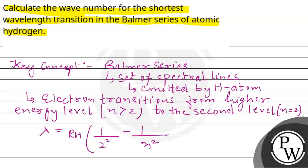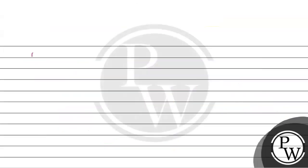So, यहां पर जो Rh है, that is called as Rydberg constant, जिसकी value होती है 1.097 multiplied by 10 raised to power 7 per meter.